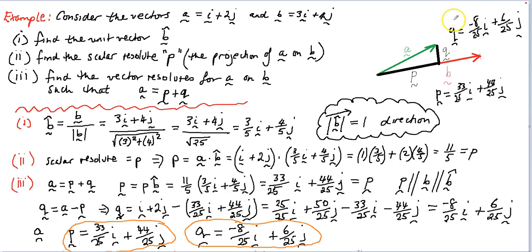Okay, and if we add these two together, we should end up with the vector A. So this is going to be A is equal to 33 25ths I minus 8 25ths I. That's going to be 25 25ths I. And 44 25ths plus 6 25ths for the J component. That's going to be equal to 50.